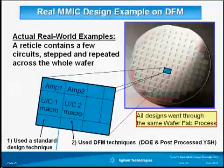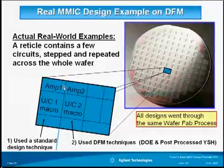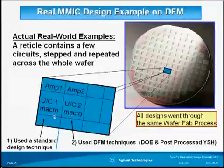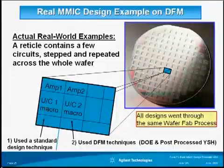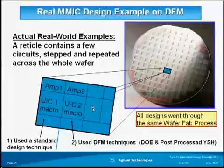To illustrate, here are two sets of real designs that we put on the wafer. AMP1 uses standard design techniques, but AMP2 used DFM design techniques — it utilized the DOE, design of experiments, and yield sensitivity histograms in ADS. Same thing with the upconverter mixer: upconverter 1 used standard design techniques without DFM, whereas upconverter 2 used DFM design techniques with DOE and yield sensitivity histograms. All these designs were fabricated at the same time, on the same wafer, and went through the same process variation.